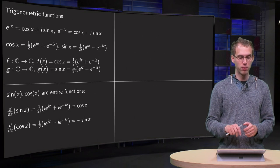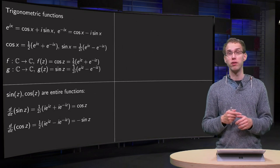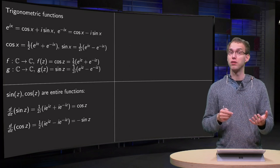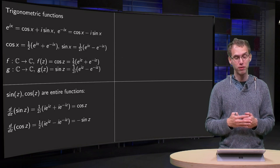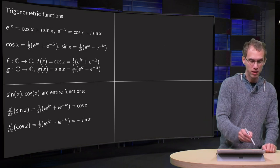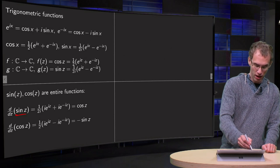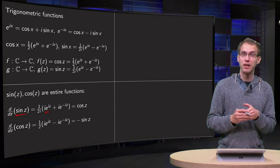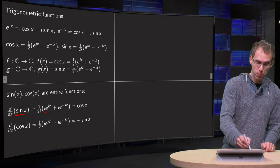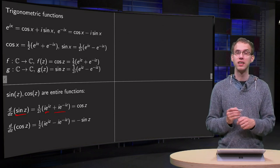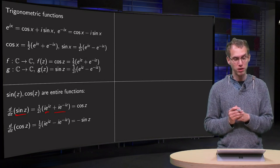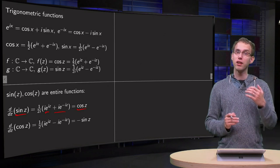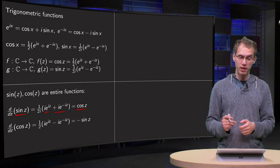Let us look at a few of the properties. First of all, they are combinations of exponentials; exponentials are entire functions, so sine and cosine are also entire functions. So what happens if you take the derivative of the sine? We get one-half times i times e to the power iz plus i times e to the power minus iz. Taking i out, we get one-half times e to the power iz plus e to the power minus iz, which is equal to the cosine of z.